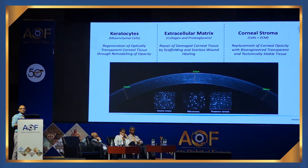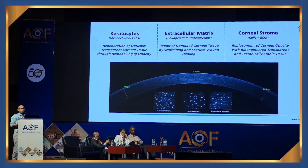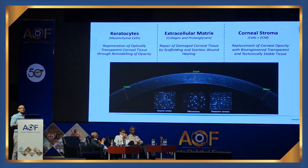You have the epithelium, then the stroma — which is mostly collagen and extracellular matrix — and then the endothelium. When you think of regenerating the stroma or creating stromal equivalents, you are basically trying to replace what is in the stroma, which is essentially collagen, extracellular matrix, and proteoglycans. You are trying to make a new extracellular matrix that mimics the composition of collagen and proteoglycans found in the normal cornea.